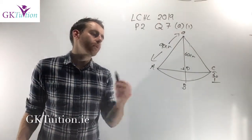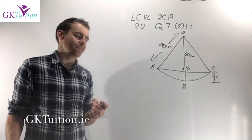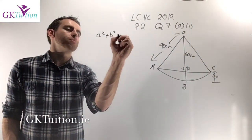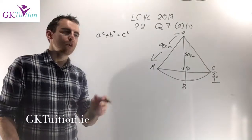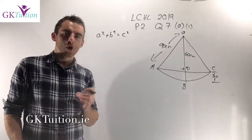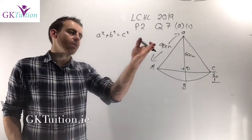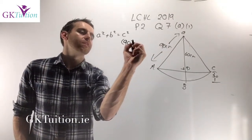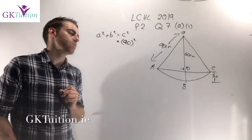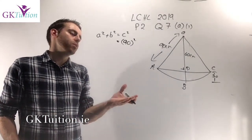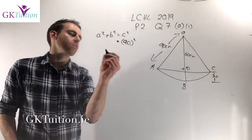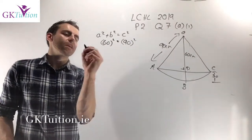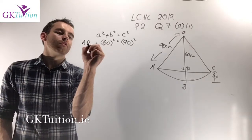Using Pythagoras' theorem — A squared plus B squared equals C squared, where C is the hypotenuse, the side opposite the right angle — in this case C is 90 centimetres, because 90 is opposite the right angle. The other two sides are OD, which is 60 centimetres, and AD, which is the one I'm looking for.